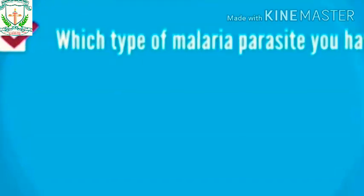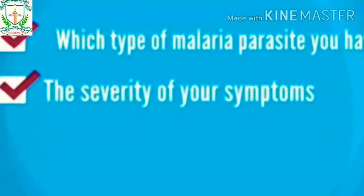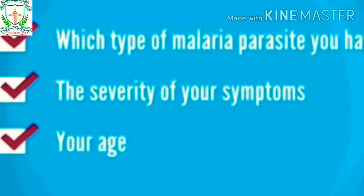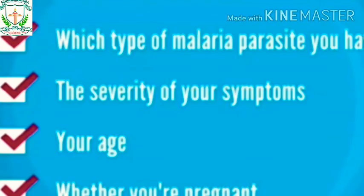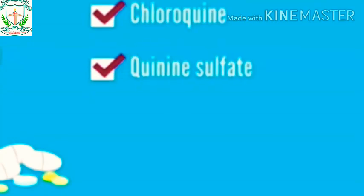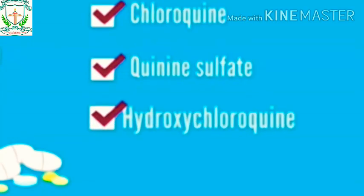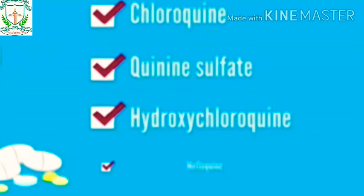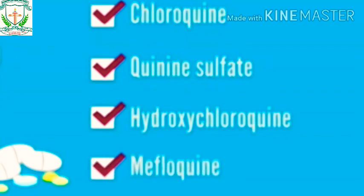The types of drugs and length of treatment will vary depending on which type of malaria parasite you have, the severity of your symptoms, your age, and whether you are pregnant. The most common anti-malarial drugs include chloroquine, quinine sulfate, hydroxychloroquine, mefloquine, and a combination of atovaquone and proguanil.